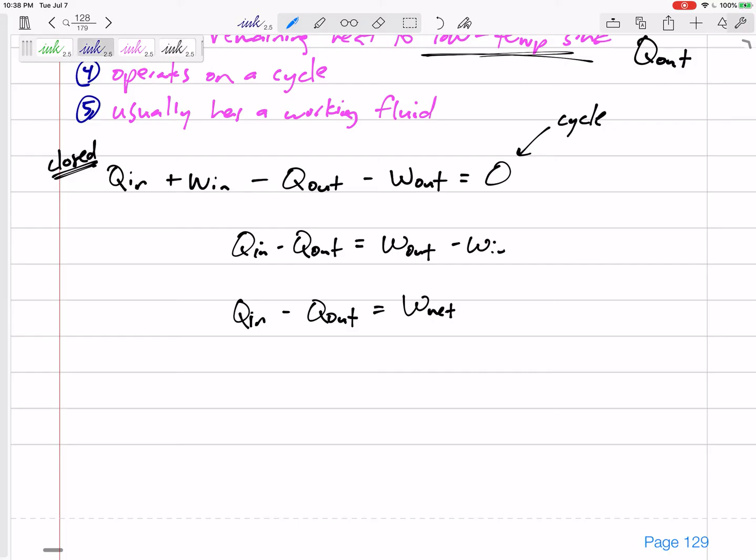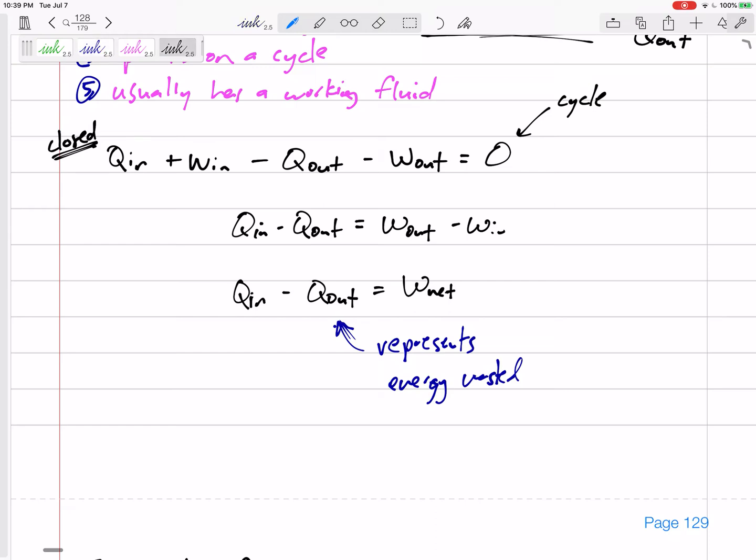Q_out represents energy that is wasted, and we're always going to have some energy wasted. So we end up having to put in more Q_in than the net work that we get, but at least we do get some work. We're putting in a lot of heat, but we are getting some work out—we're taking heat from fire or spark ignition and rotating something, getting some work out from that heat.